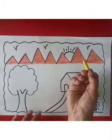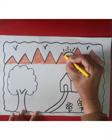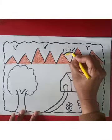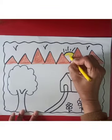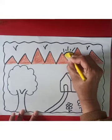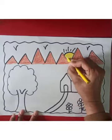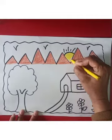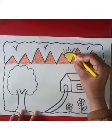What is the color of the sun? Yellow. So we will do yellow color in the sun. Do color neatly and nicely.